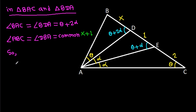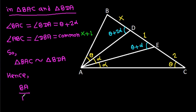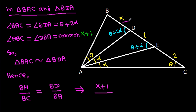So triangle BAC is similar to triangle BDA. Hence BA over BC equals BD over BA. BA is X minus 1, BC is (X minus 1) minus 2 which is X minus 3, BD is X, and BA is X minus 1.